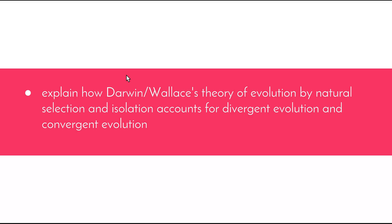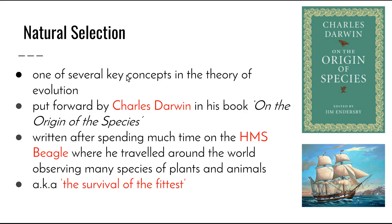Welcome to the next video in the blueprint of life topic. This video is going to look at the dot point: explain how Darwin-Wallace's theory of evolution by natural selection and isolation accounts for divergent evolution and convergent evolution.